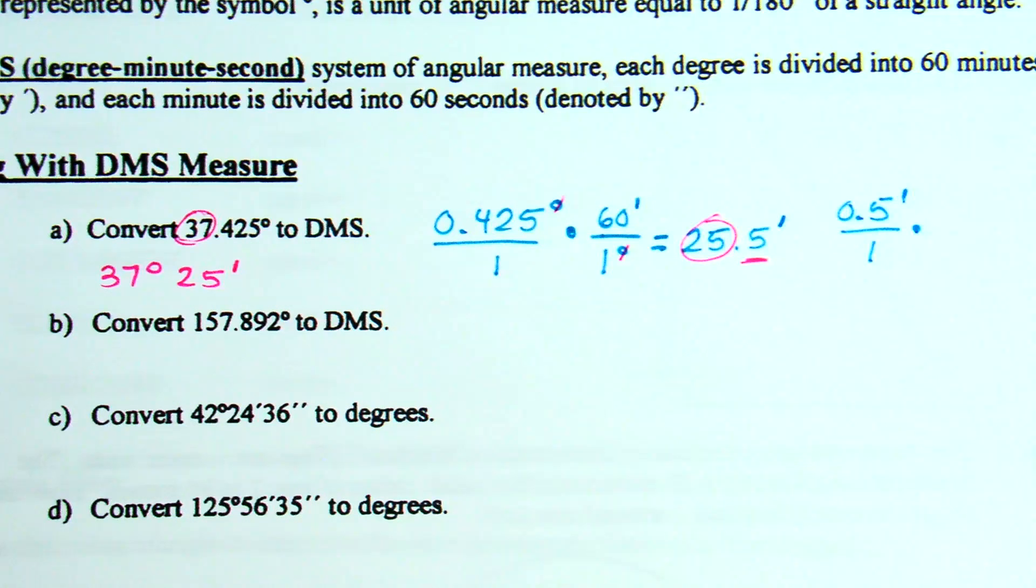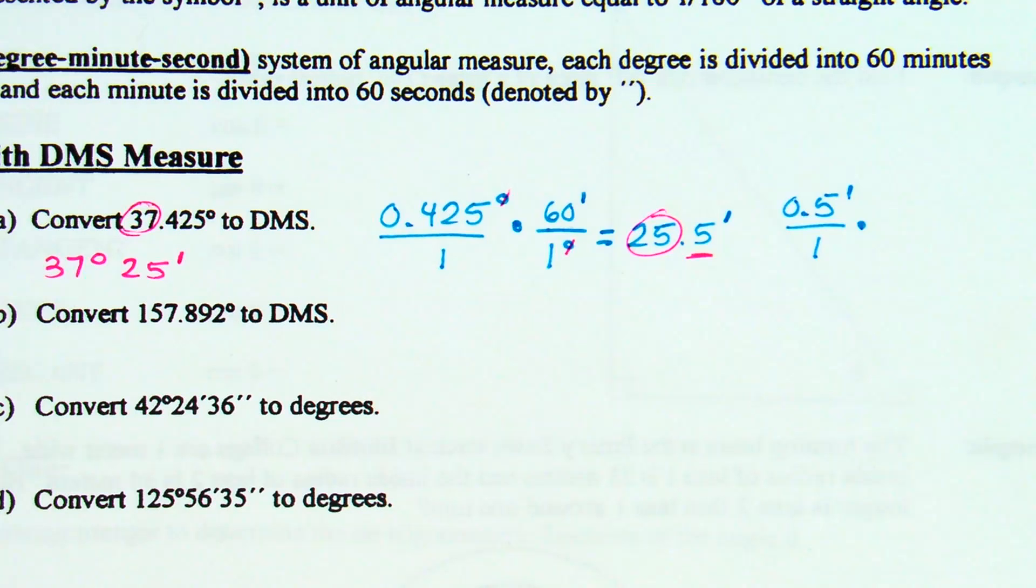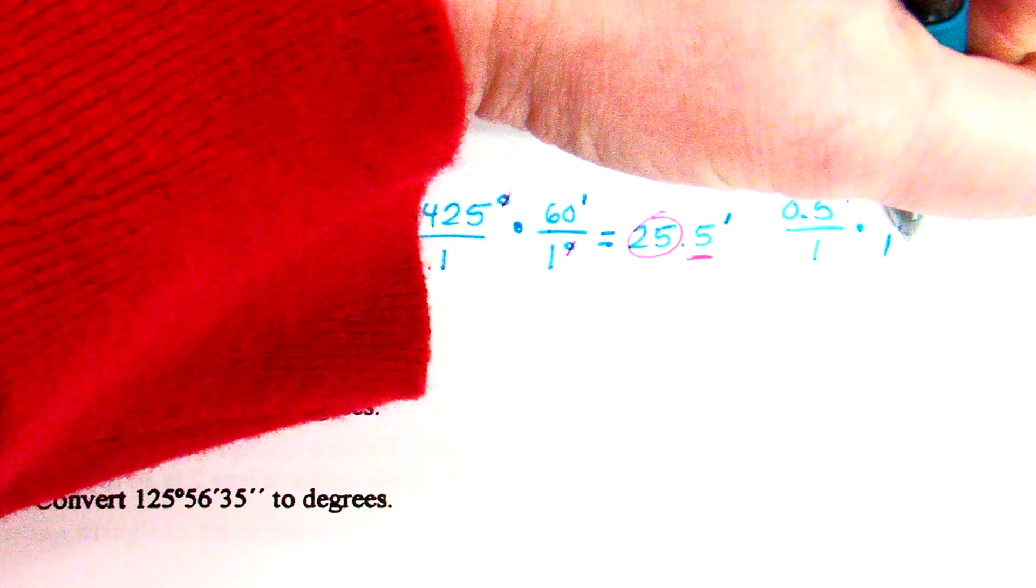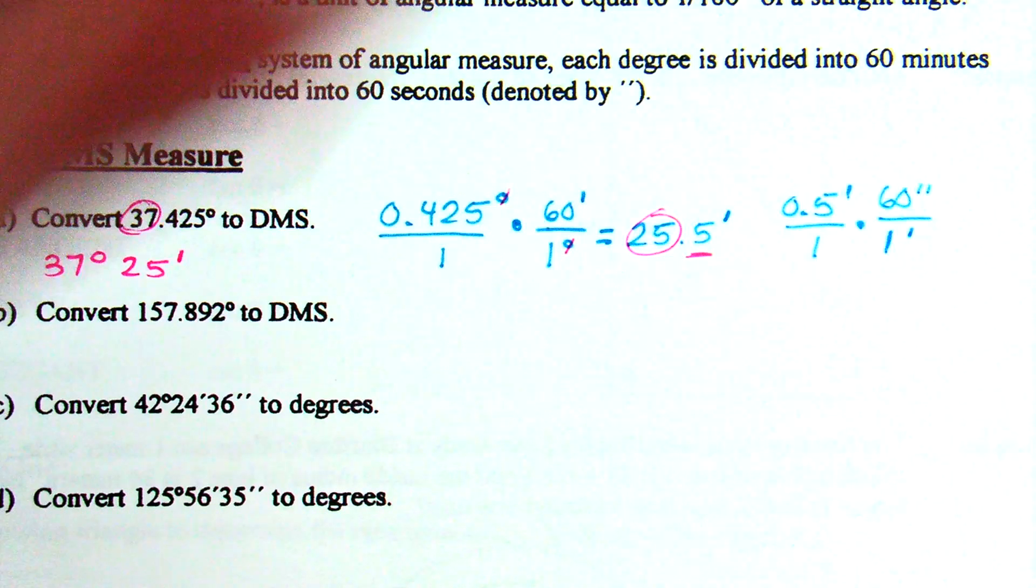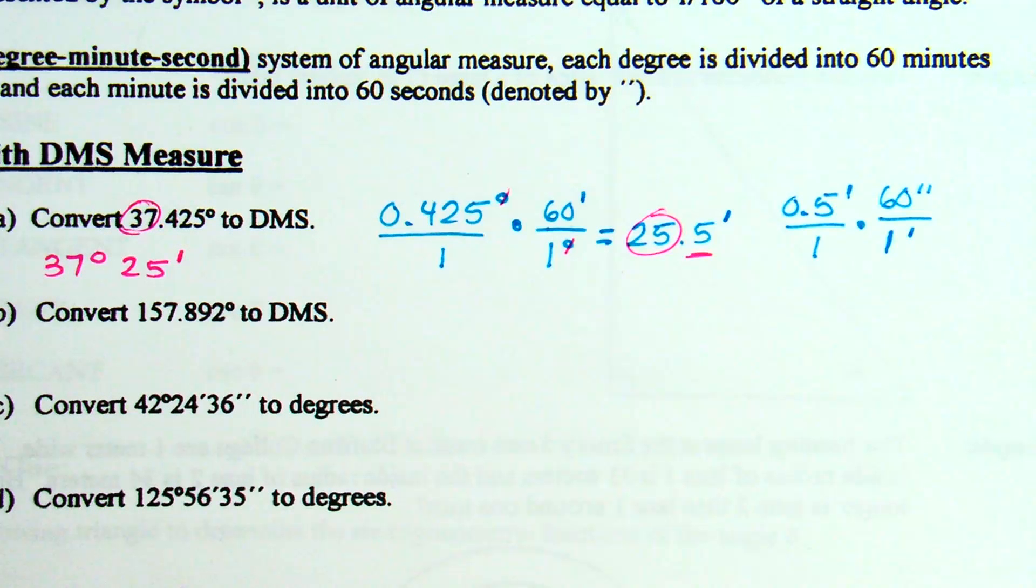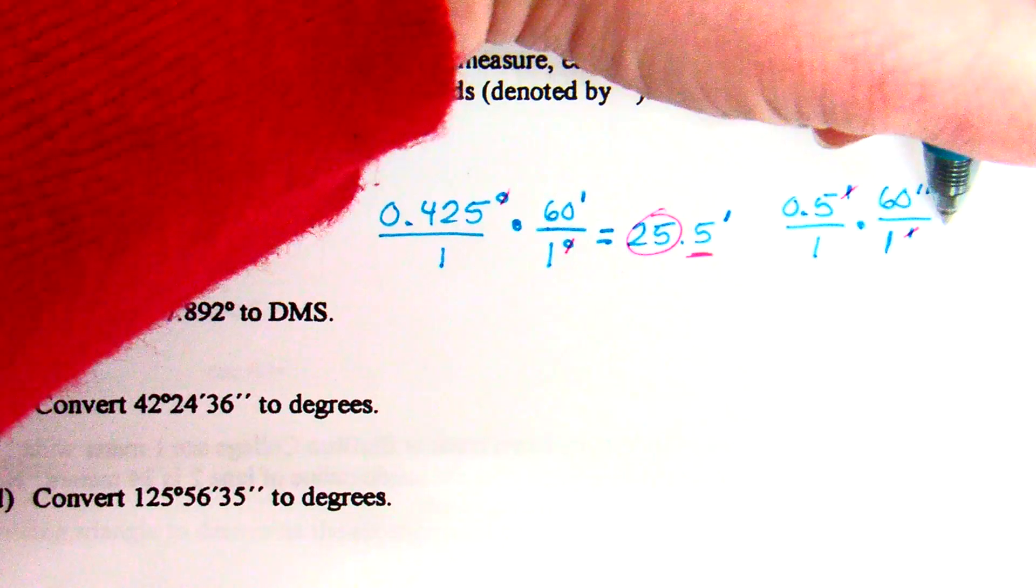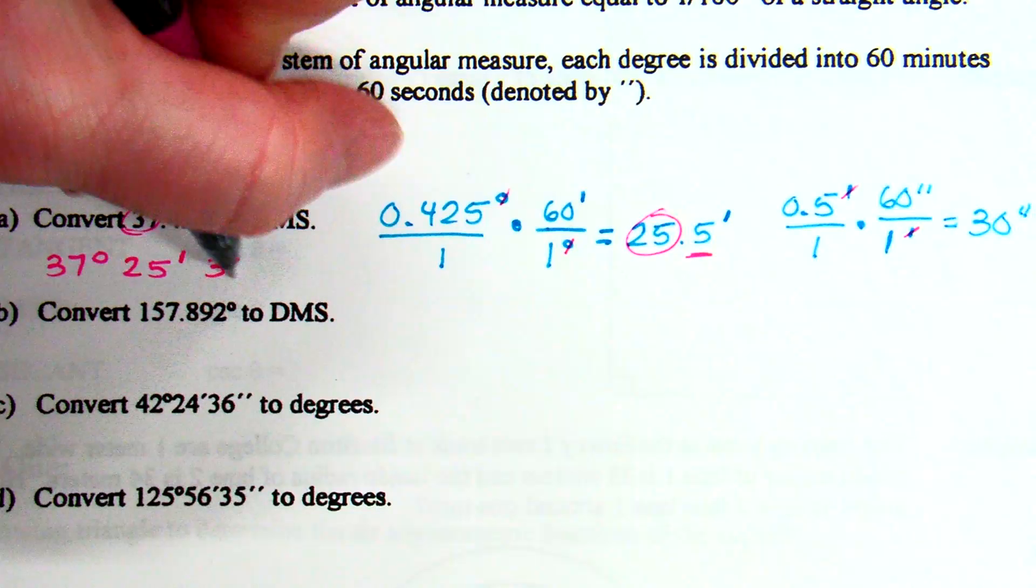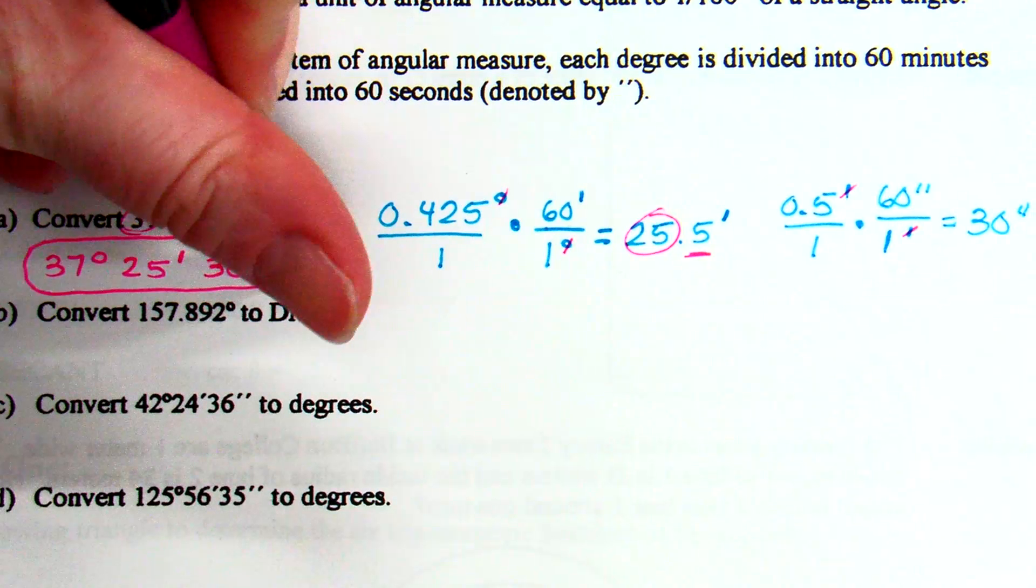Now, mathematically, I'm going to work it out because it won't always be that easy. We are left with 0.5 minutes. We're trying to get minutes to seconds. What's the connection? We know 1 minute is 60 seconds. So if I want minutes to cancel, 60 seconds over 1 minute. My minutes cancel. And 0.5 times 60 is, as we expect, 30 seconds. So this answer becomes 37 degrees, 25 minutes, and 30 seconds.